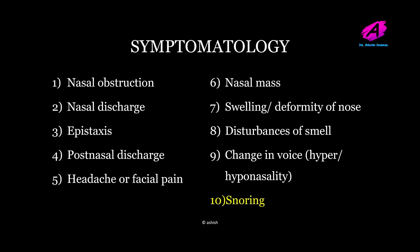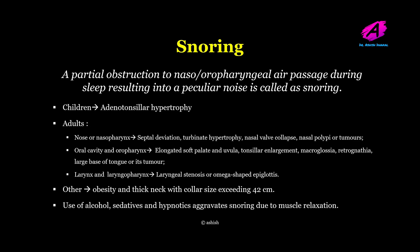The other symptom a patient may present with is snoring. Snoring is a partial obstruction to nasal or oropharyngeal air passage during sleep, resulting in a peculiar noise. In children it may be due to adeno-tonsillar hypertrophy. In adults, causes include nasal or nasopharyngeal conditions like septal deviation, turbinate hypertrophy, nasal valve collapse, nasal polyp or tumors; oral cavity conditions like elongated soft palate and uvula, tonsillar enlargement, macroglossia, retrognathia; laryngeal conditions like laryngeal stenosis or omega-shaped epiglottis; and obesity with collar size exceeding 42 centimeters. Alcohol, sedatives, and hypnotics aggravate snoring due to muscle relaxation.